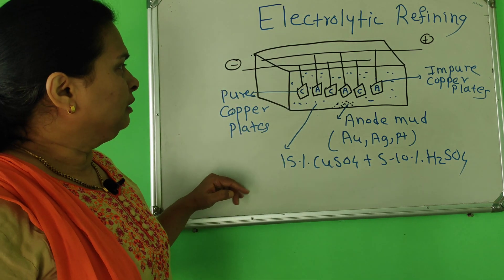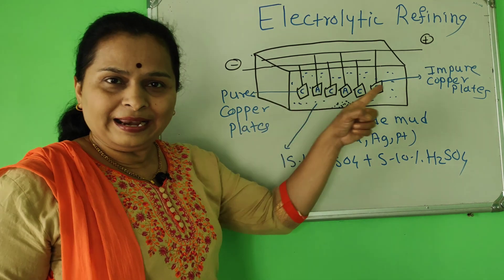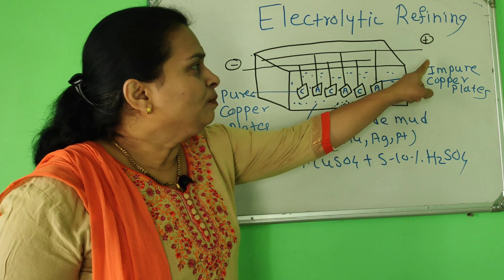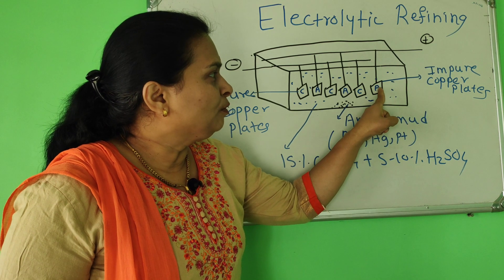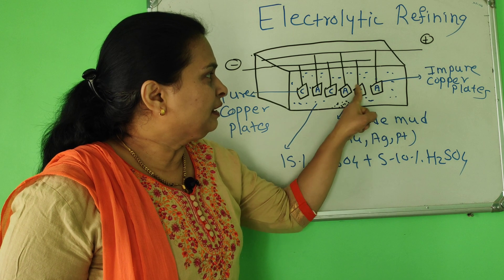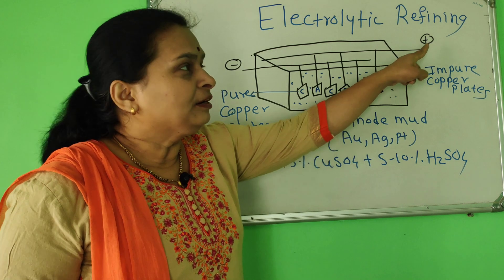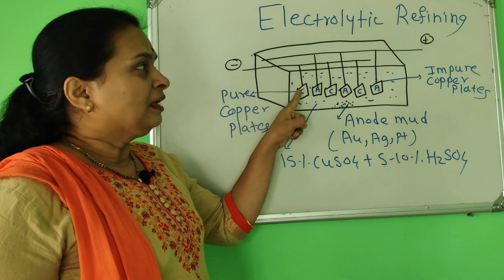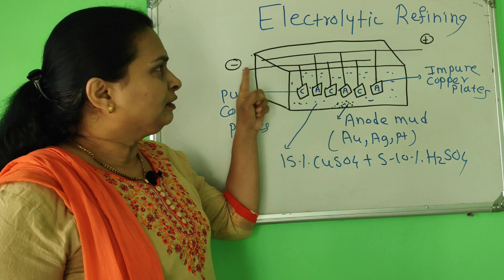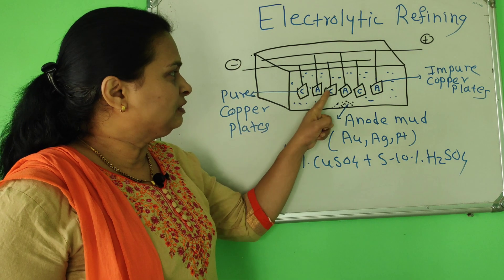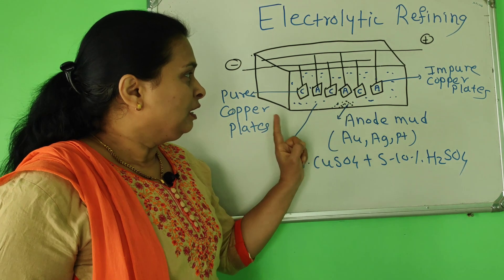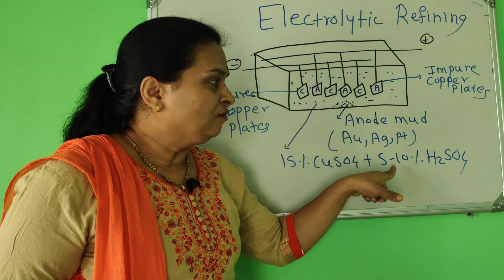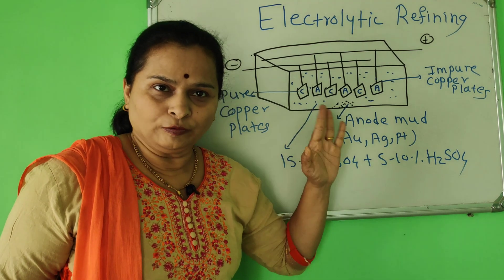The process involves a lead-lined steel tank. In this steel tank, impure copper plates (AAA) are connected to the positive pole of the battery as the anode. Pure copper plates (CCC) act as cathode and are connected to the negative pole of the battery. The electrolyte is 15% copper sulfate solution with 5 to 10% H2SO4.